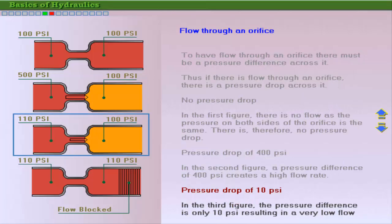In the third stage, the pressure difference on both sides of the orifice is only 10 psi. Flow exists, but is slower than the previous example.